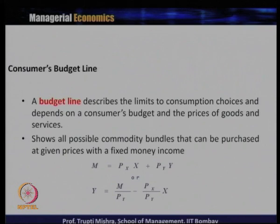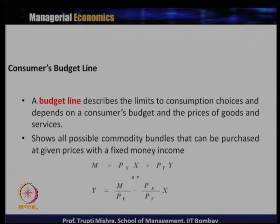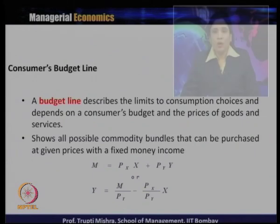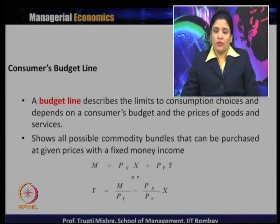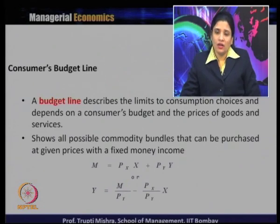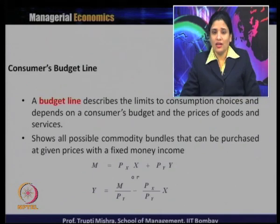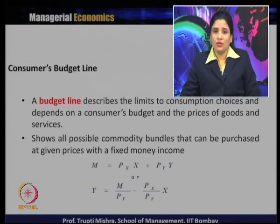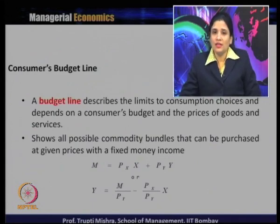What is a budget line? The indifference curve gives us the consumer preferences and the different combinations of goods and services which give the same level of satisfaction. More is always better for the consumer, but when it comes to affordability, income poses a constraint. The budget line describes the limits to consumption choice and depends on consumer budgets and the prices of goods and services. It shows all possible commodity bundles that can be purchased at given prices with a fixed money income.